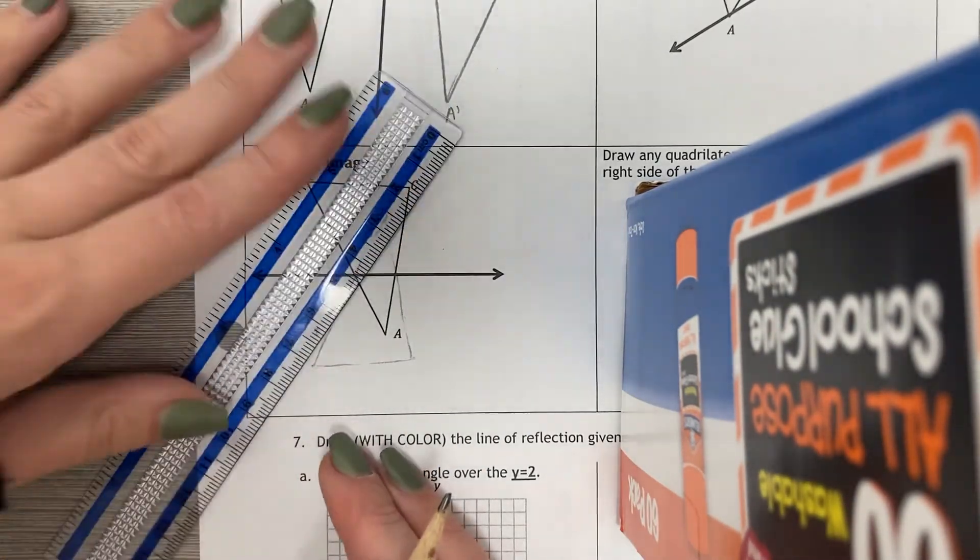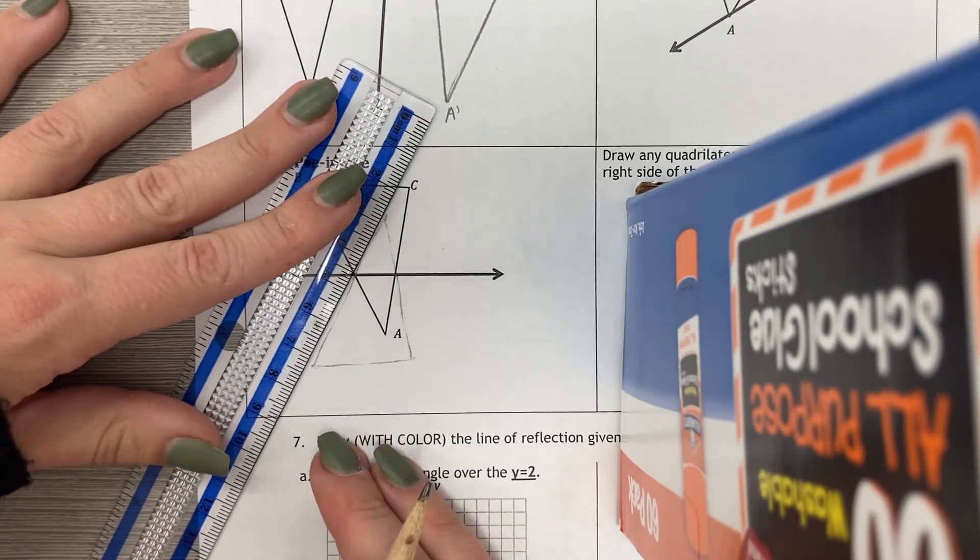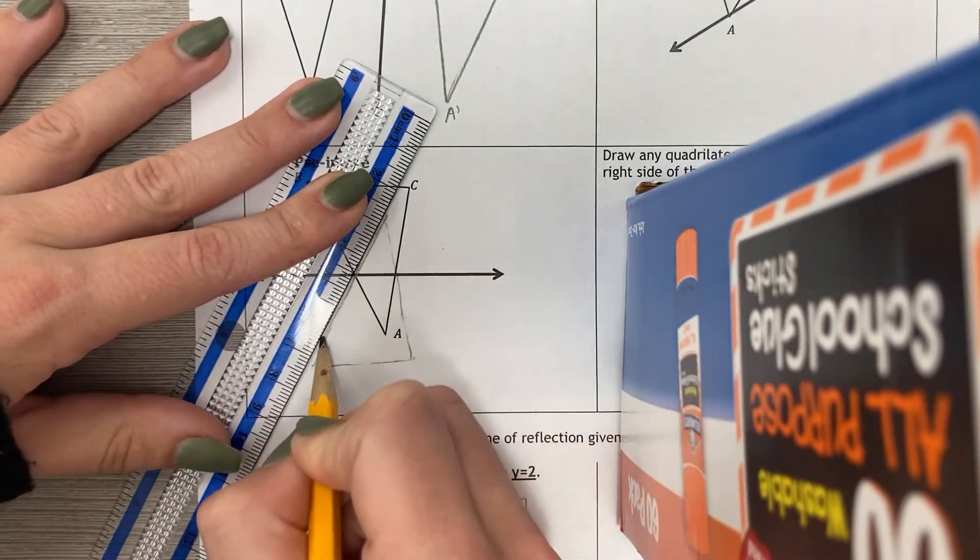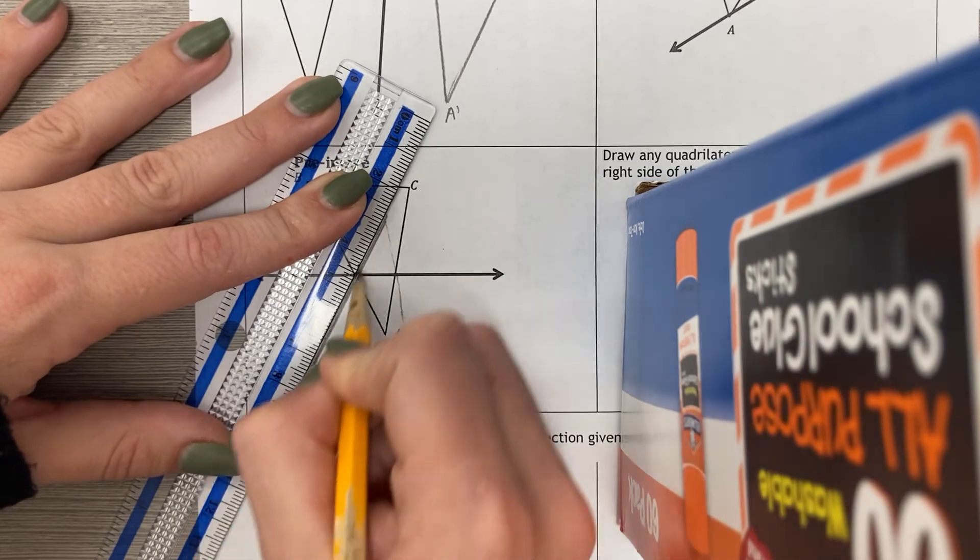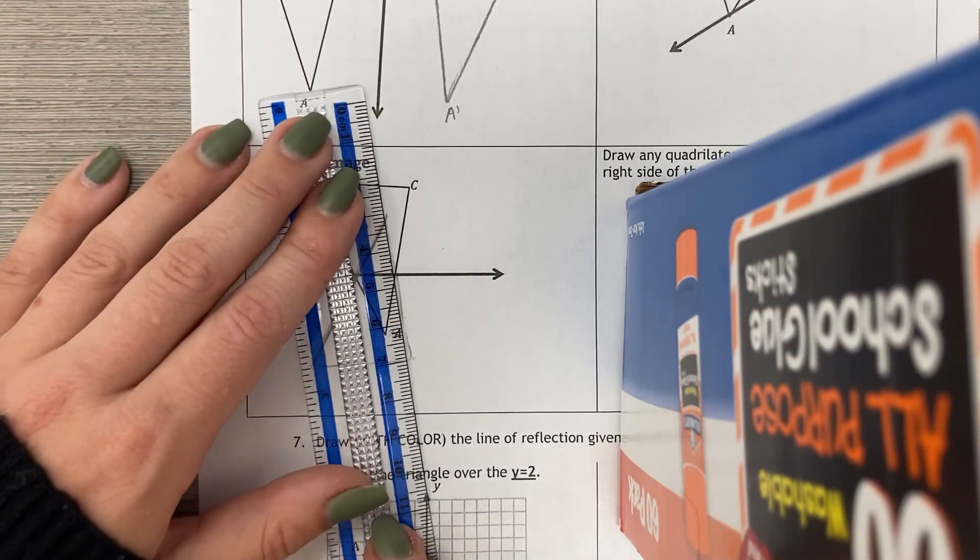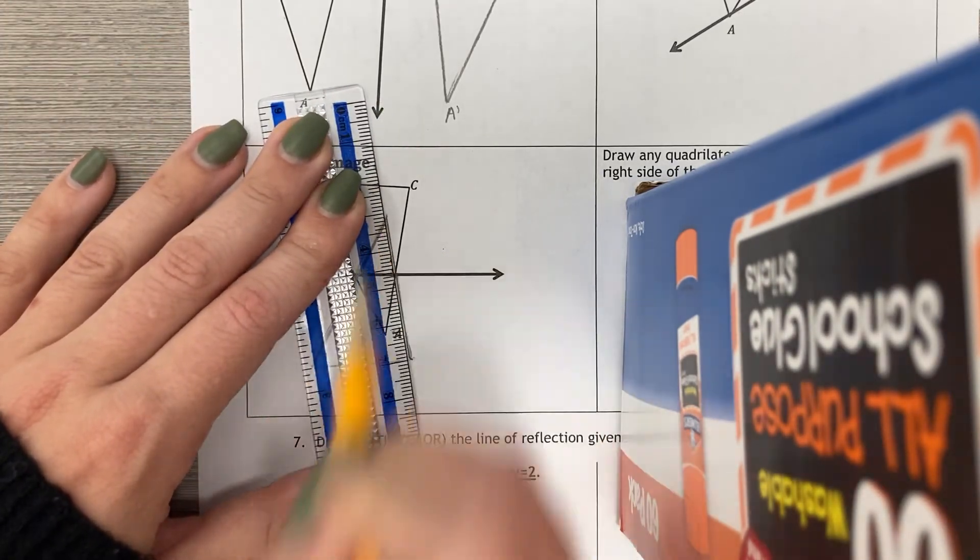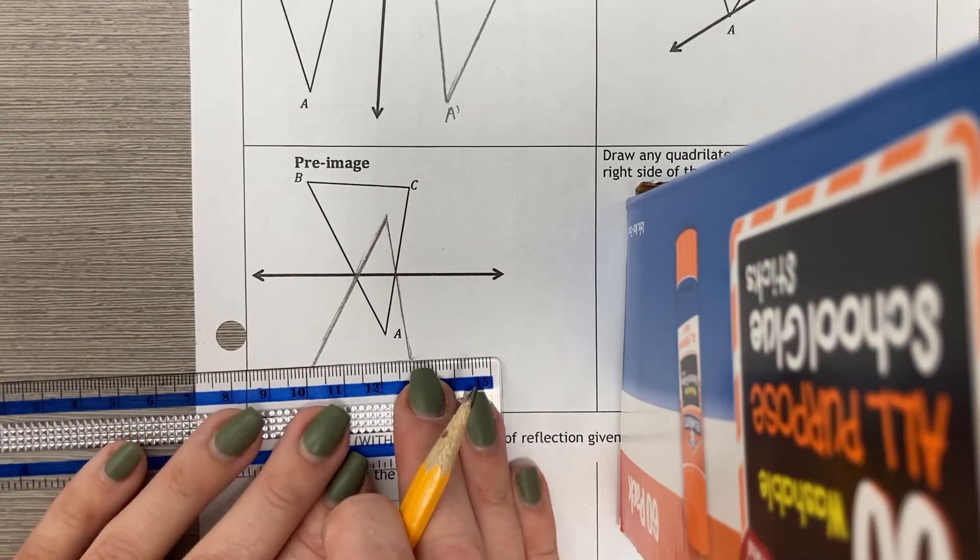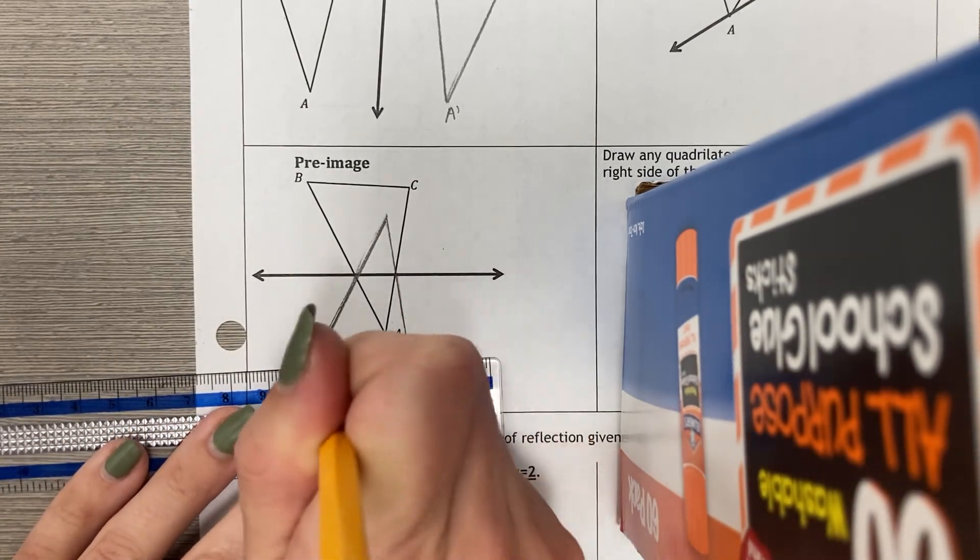So now I take my ruler, make sure I'm on those points, connect those points, connect these points, and connect these points.